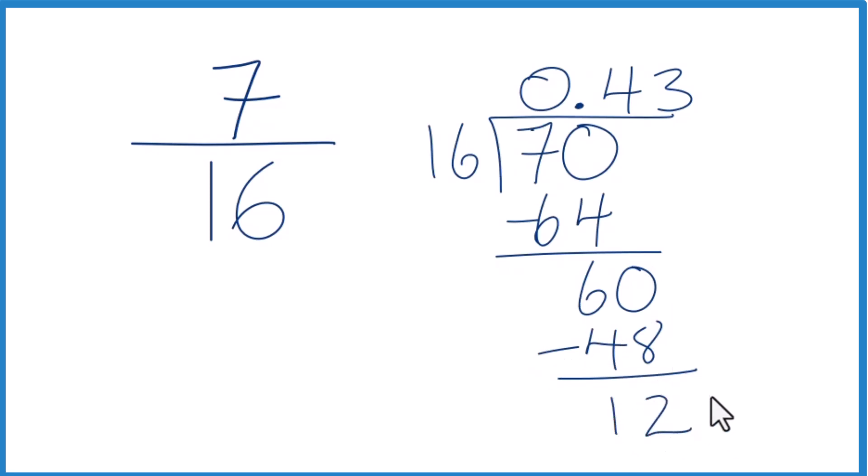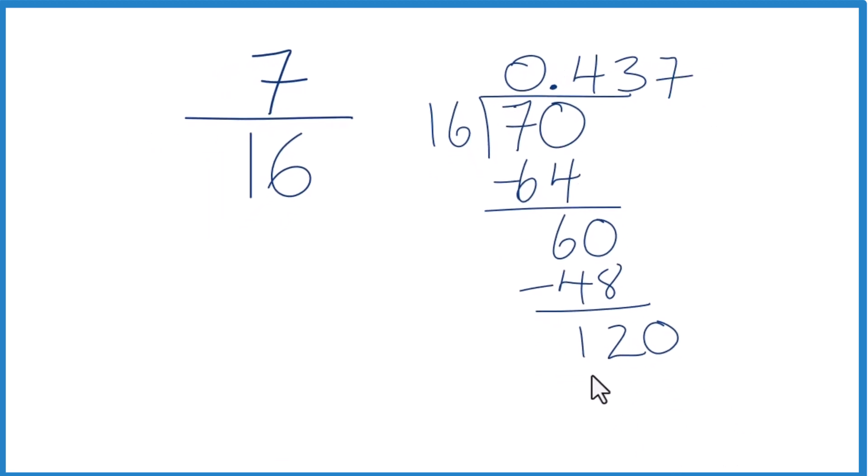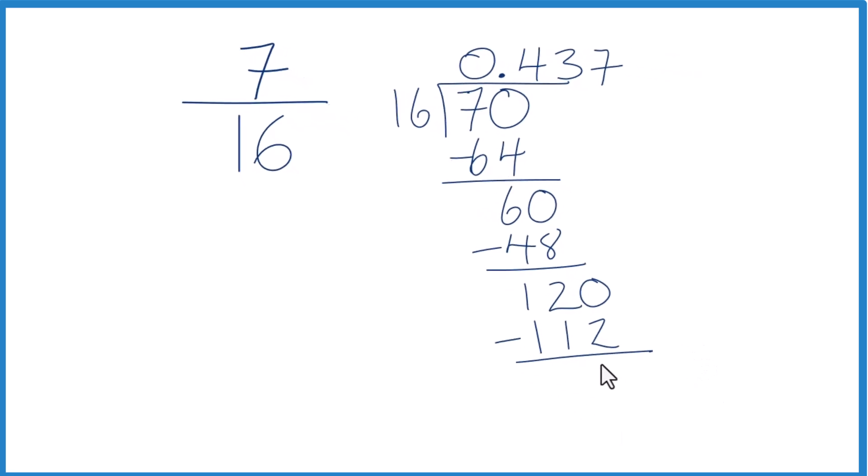16 doesn't go into 12. Call it 120. Move over 1. And 7 times 16 is 112. 120 minus 112 is 8.